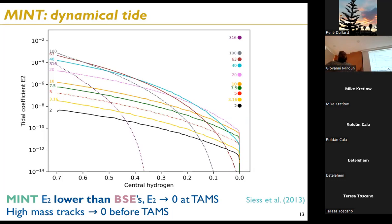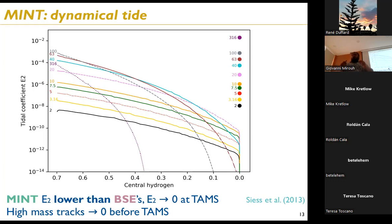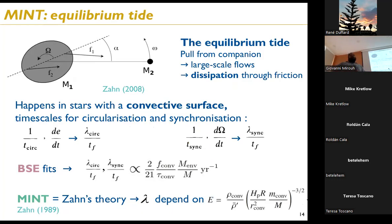Our MINT calculation of E2 shows it starts at a high value at zero-age main sequence (meaning efficient tides), then decreases as the star evolves — tides become progressively less efficient. Comparing with BSE prescriptions, BSE always overestimates tidal efficiency at zero-age main sequence and increasingly overestimates it with time because the BSE value doesn't decrease.